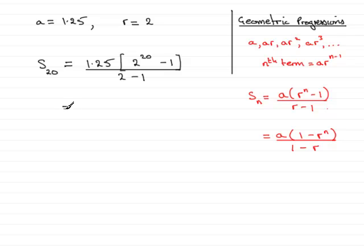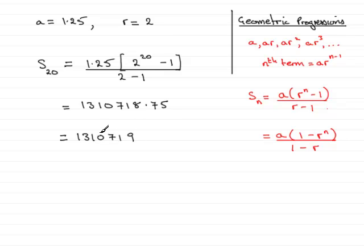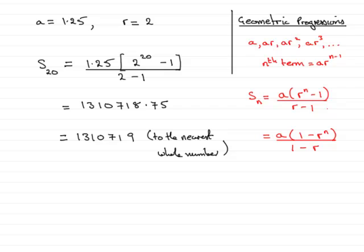Working that out on the calculator, we get 1,310,718.75. We're asked to give the answer to the nearest whole number, so to the nearest whole number this is going to be 1,310,719. And that brings us to the end of this part of the question — in fact, to the end of the whole question.